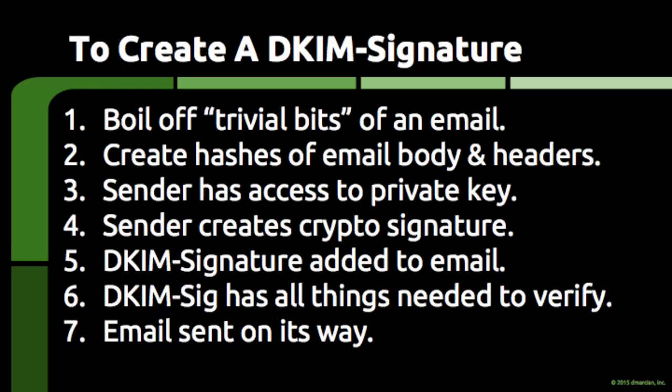Step 1: The email server takes the piece of email and boils off all parts considered trivial — things like white space, extra lines at the end of the email, and how headers are folded are stripped out. DKIM has a few configuration options around how much boiling should be done, but the concept is called canonicalization — because it's a fun word to say — and we'll move on.